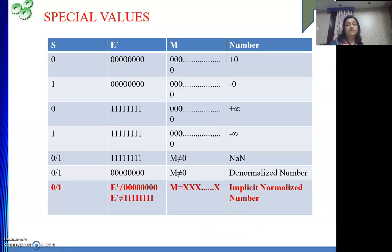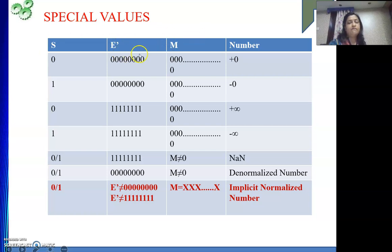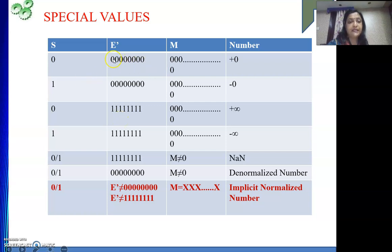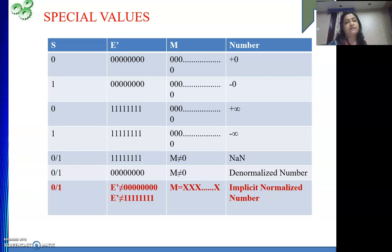Now let's see what special values we are going to represent. We have three components in our number: S, E', and M. What values of E' cannot occur in a normal number? All 0 and all 1 are not valid for normal numbers. When E' is all 0 and all 23 bits of M are also 0, it is representing the value 0.